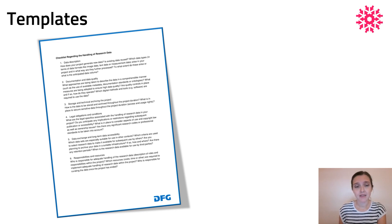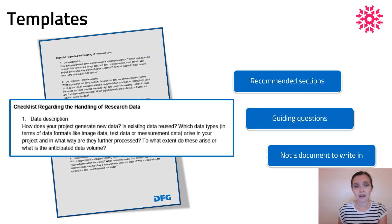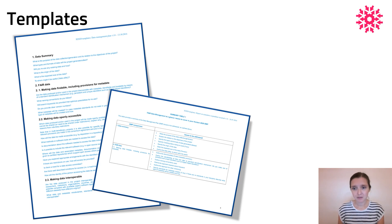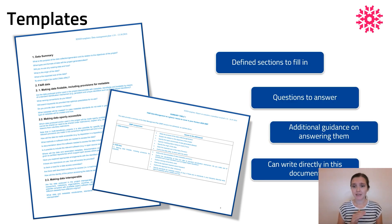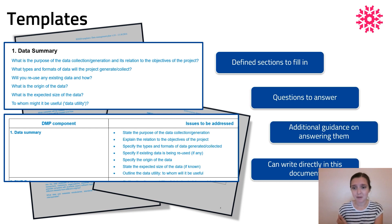The first one we have is from the DFG, called the 'checklist regarding the handling of research data'. They have six recommended sections your DMP should include, and for each, some guiding questions. This is not really a template in the sense of a document to write in — it's more like guidelines for a document you write yourself. Next we have the Horizon 2020 template, which is similar but with perhaps a bit more for you. We have defined sections to fill in with a short list of guiding questions and a supplementary table with extra hints.